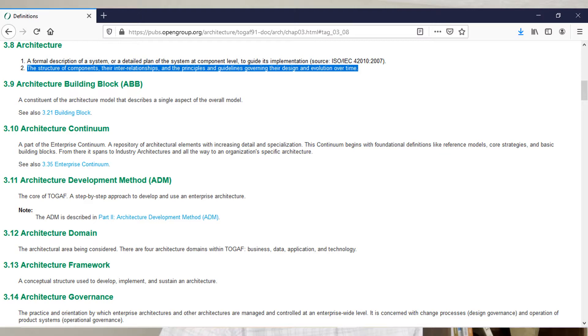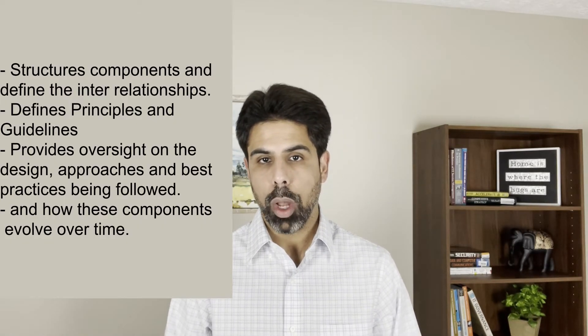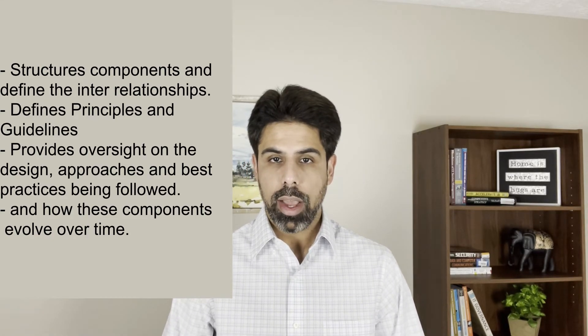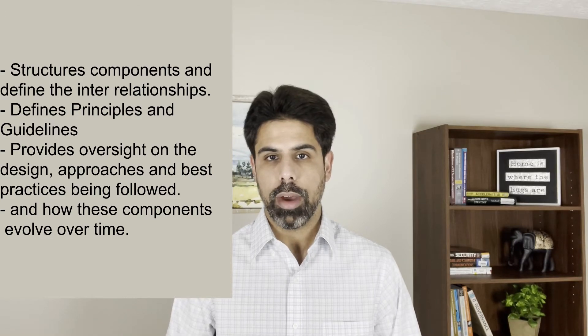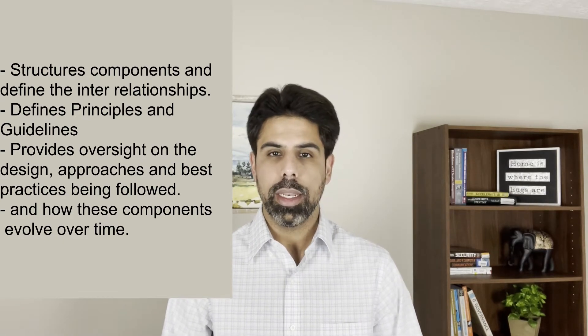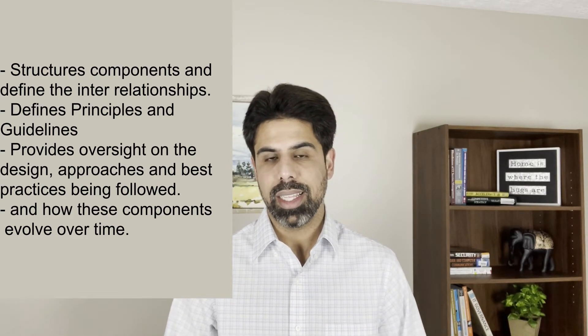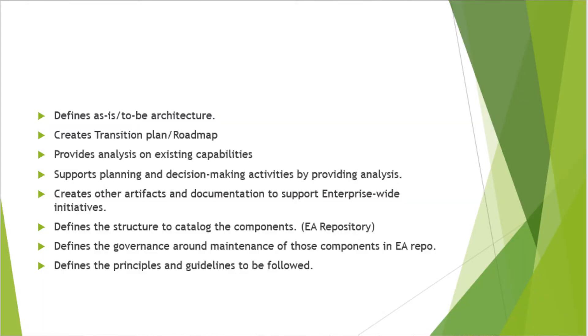The next definition on the list is by TOGAF. TOGAF describes an architecture as 'the structure of components, their interrelationships, and the principles and guidelines governing their design and evolution over time.' Putting this into the perspective of enterprise architecture, an enterprise architect would be someone who structures the components and their interrelationships, defines principles and guidelines, provides oversight on design approaches and best practices to be followed, and keeps an eye on those components as they evolve.